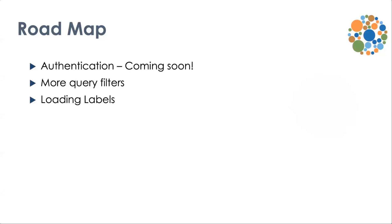Now I'll end with the roadmap for the plugin. First thing coming extremely soon — within the next week — is authentication. I'm going to initially support query parameter authentication and bearer token authentication, so if you have a private API you can search it through the plugin. I'm also going to add more query filters — different types of metadata properties you can filter on. And lastly, loading labels: for machine learning data you sometimes have raster labels or more specifically vector labels, and I want to add functionality to let you download the source imagery and the labels together.